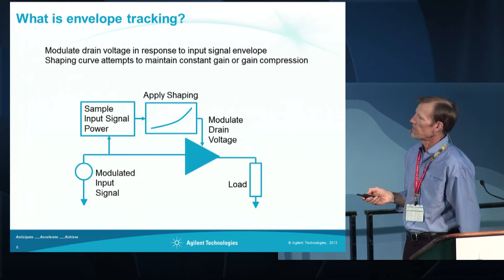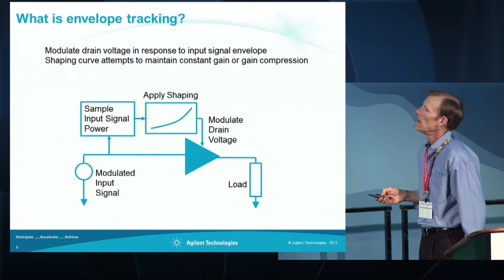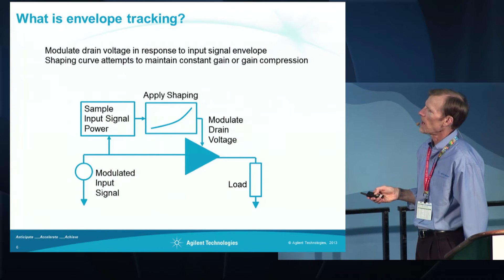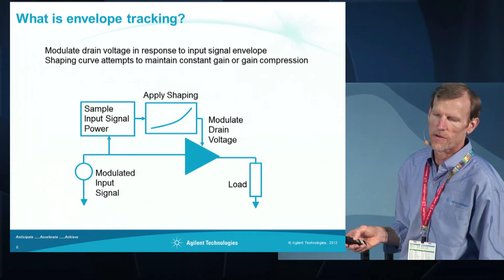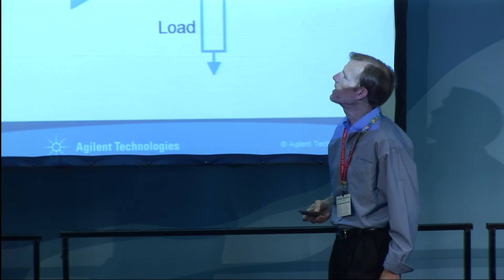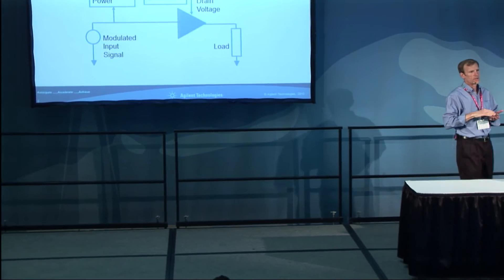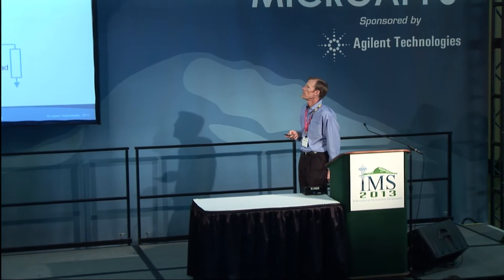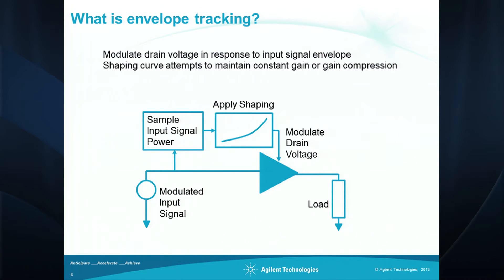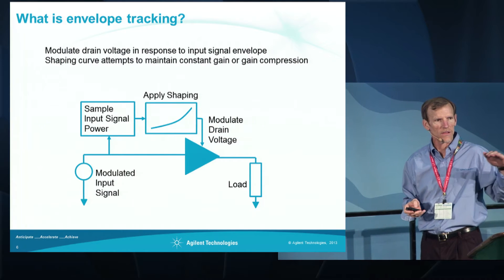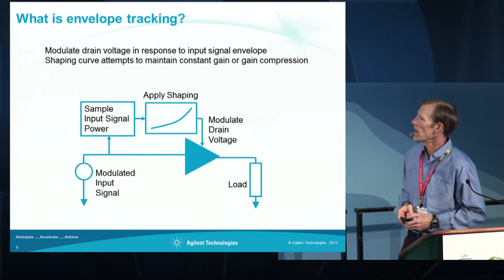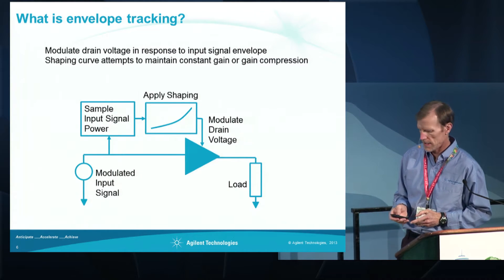This is a simple block diagram for simulating envelope tracking. We have a modulated input signal; we sample the input signal power and adjust the drain bias up and down as the amplitude of the modulated input signal varies. As we vary the amplitude of the bias on the PA, its gain is going to change, introducing distortion. A method of overcoming this is applying a shaping curve — so as we adjust the drain bias, we can keep the amplifier operating at the same gain level, or at a constant level of gain compression if we want to maximize power added efficiency.